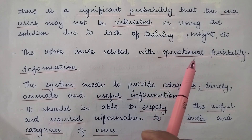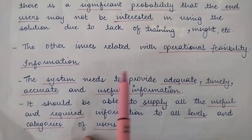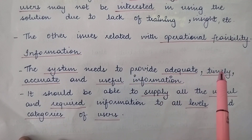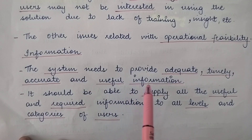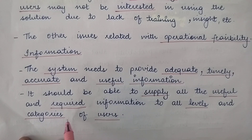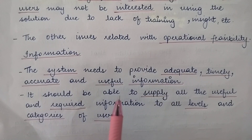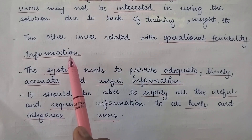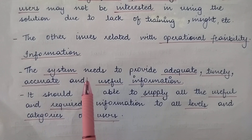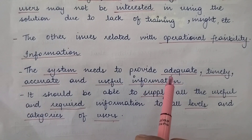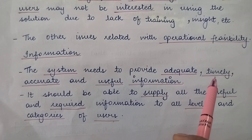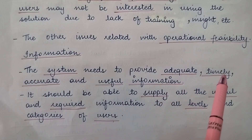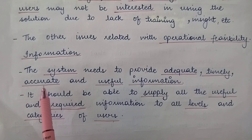The other issues that may be related with operational feasibility — the first one is information. The system needs to provide adequate, timely, accurate, and useful information. It should be able to supply all the useful and required information to all the levels and categories of users. The system is considered to be successfully operational if it is providing you with adequate — that means complete — information, and timely, meaning as and when required, not after a certain time lapse.